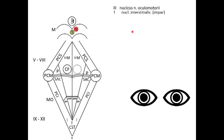Sometimes you can hear that this nucleus interstitialis, or nucleus impar, is also called the nucleus of Perlia — it's the same, just a different name. It is very common that several anatomical features have a name according to the person, the scientist who described them in detail.